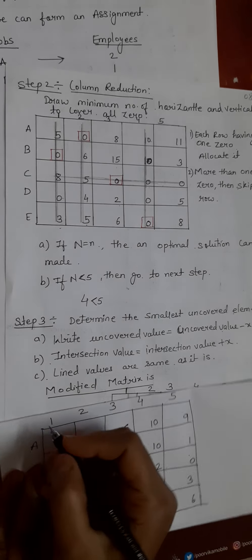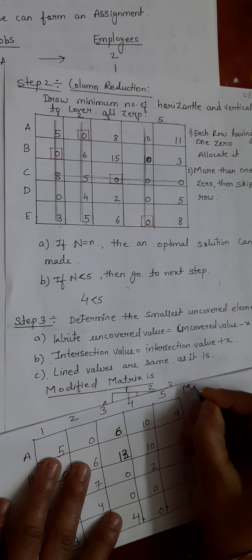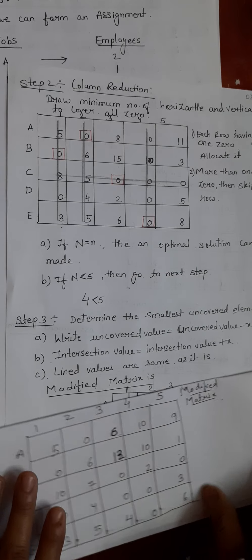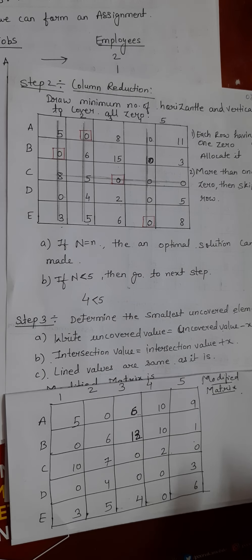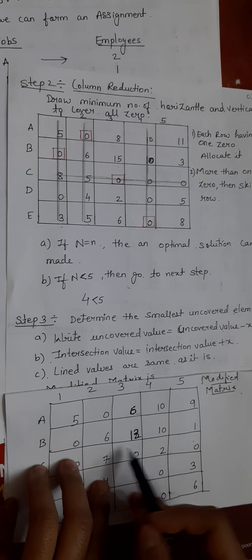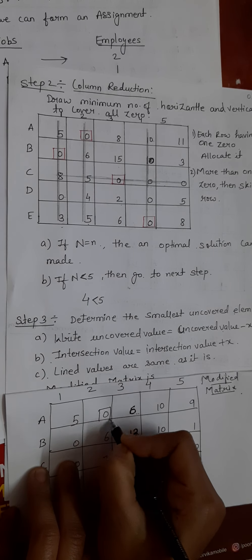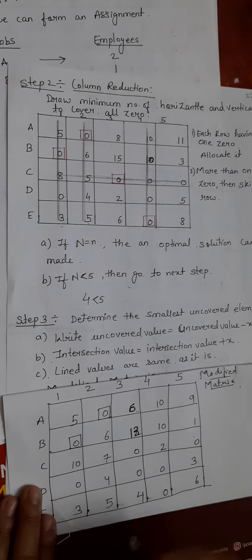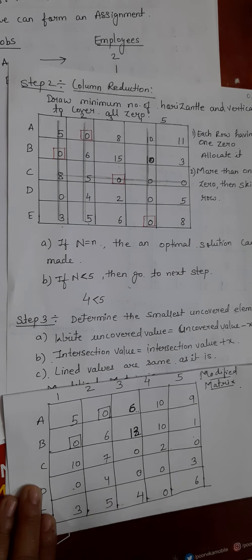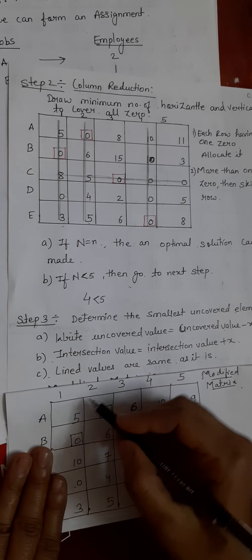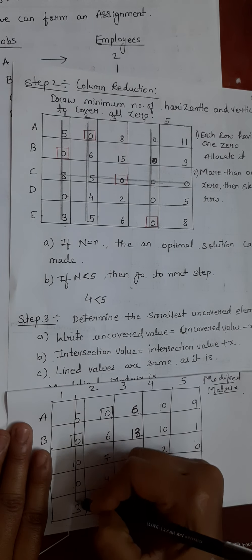Here we get the modified matrix. Now we perform row scanning and column scanning on the modified matrix. If a row contains exactly one zero, we allocate it. If more than one zero, we skip it. Row 1: one zero — allocate. Row 2: one zero — allocate. Row 3: two zeros — skip. Row 4: three zeros — skip. Row 5: one zero — allocate. We draw vertical lines through the allocated cells.